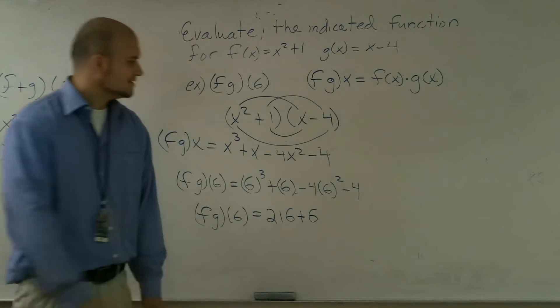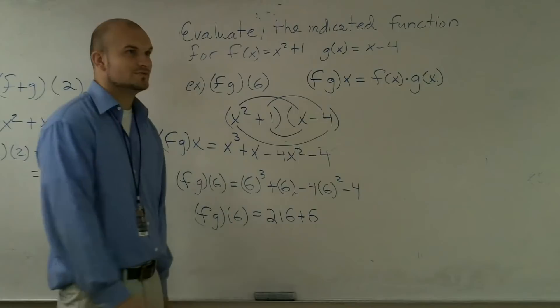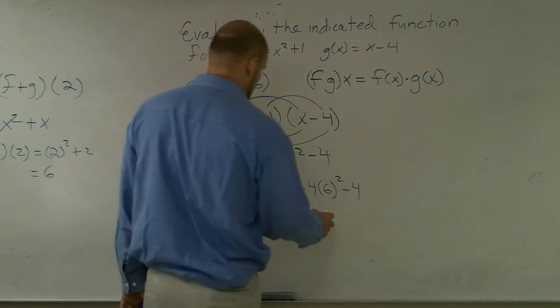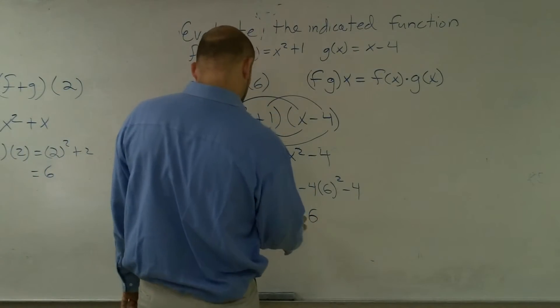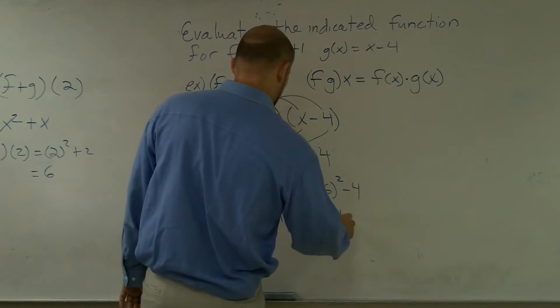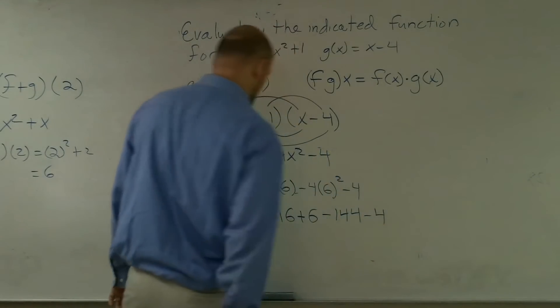Plus 6, 4 times 36 would be 144, right? Plus 6 minus 144 minus 4.